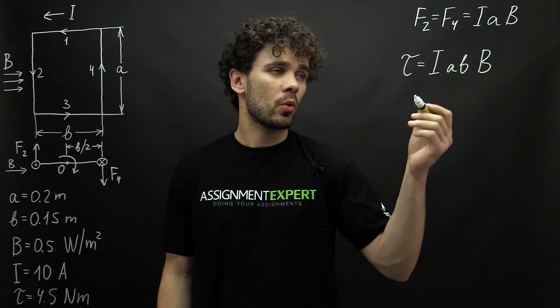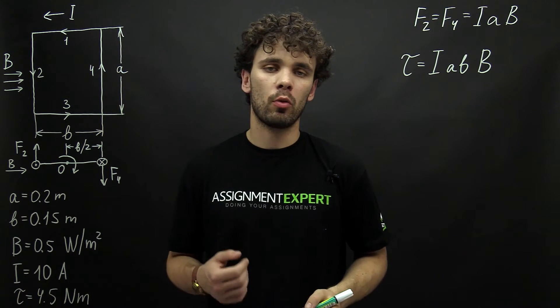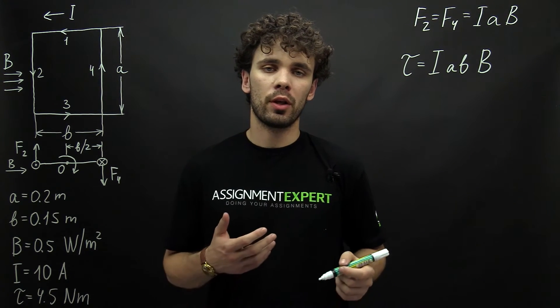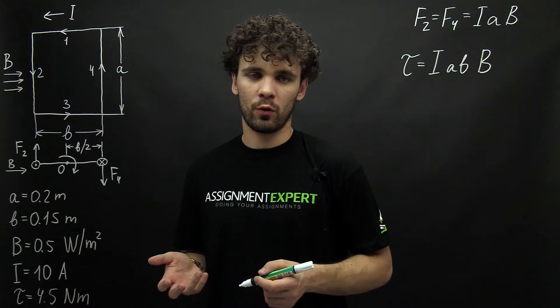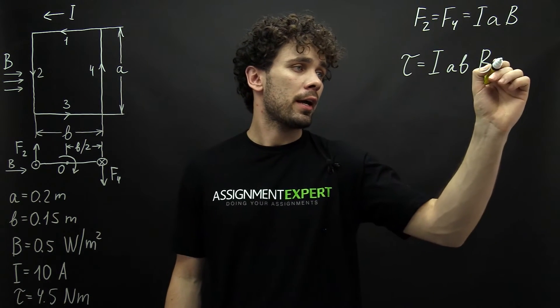Okay, so here as I said we found the torque for one loop of our coil. And we know that torque is proportional to the number of coils. Therefore, if we add N, the number of coils on the right,